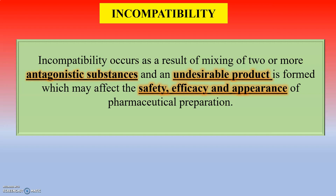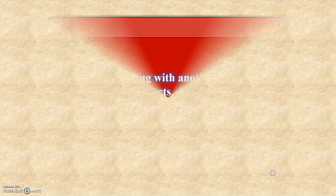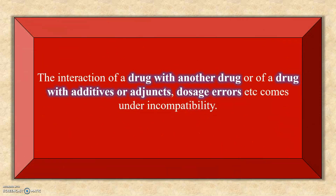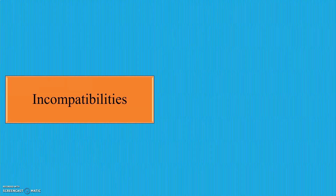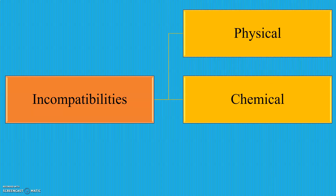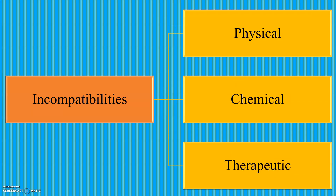First, let us see what is incompatibility. Incompatibility occurs as a result of mixing of two or more antagonistic substances, and an undesirable product is formed which may affect the safety, efficacy, and appearance of a pharmaceutical preparation. The interaction of a drug with another drug, or of a drug with additives or adjuncts, dosage errors, etc., comes under incompatibility. The types of incompatibilities are: first, physical incompatibility; second, chemical incompatibility; and third, therapeutic incompatibility.